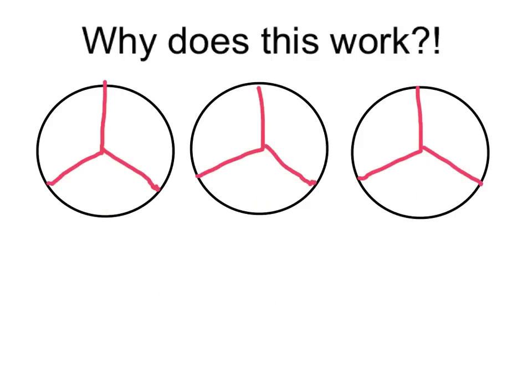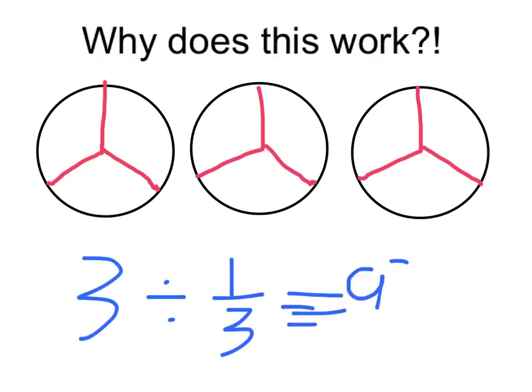To illustrate this further, what if we were dividing three by one-third? Now what we're wondering is how many thirds are there in three? We're cutting these pizzas up into smaller and smaller slices. So as you can see, there are nine-thirds. And that makes sense because when we're cutting the pizzas into smaller pieces, there are more of them.